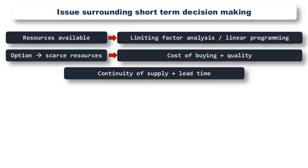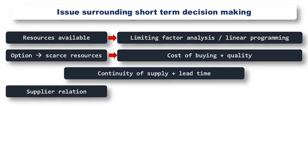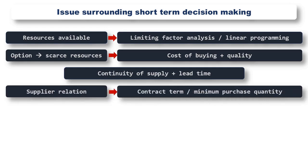If we cannot meet demand, there is a risk that our customers will go elsewhere, and we will not only lose that sale but we may lose all future sales to that customer. It is also wise to consider whether you will be tied to a supplier for a fixed period of time. What is the minimum contract term or minimum purchase quantity? Does this affect our future plans? If the resource that is scarce now becomes available in the future, we may want to stop buying the product in and start making it in-house again, given that it is likely to cost more to buy than to make.